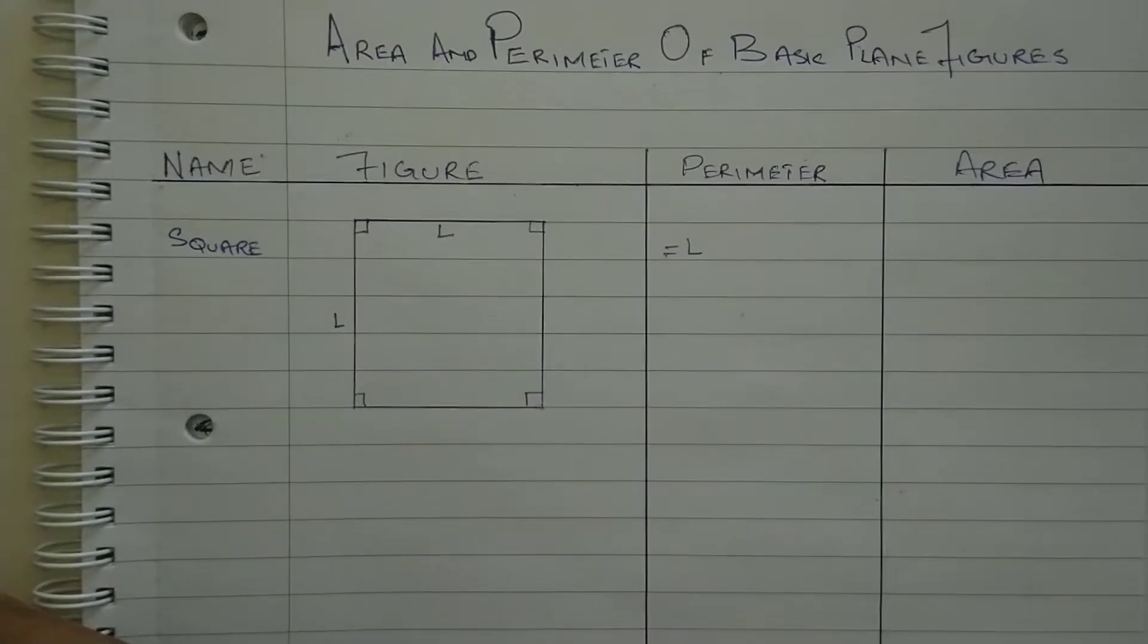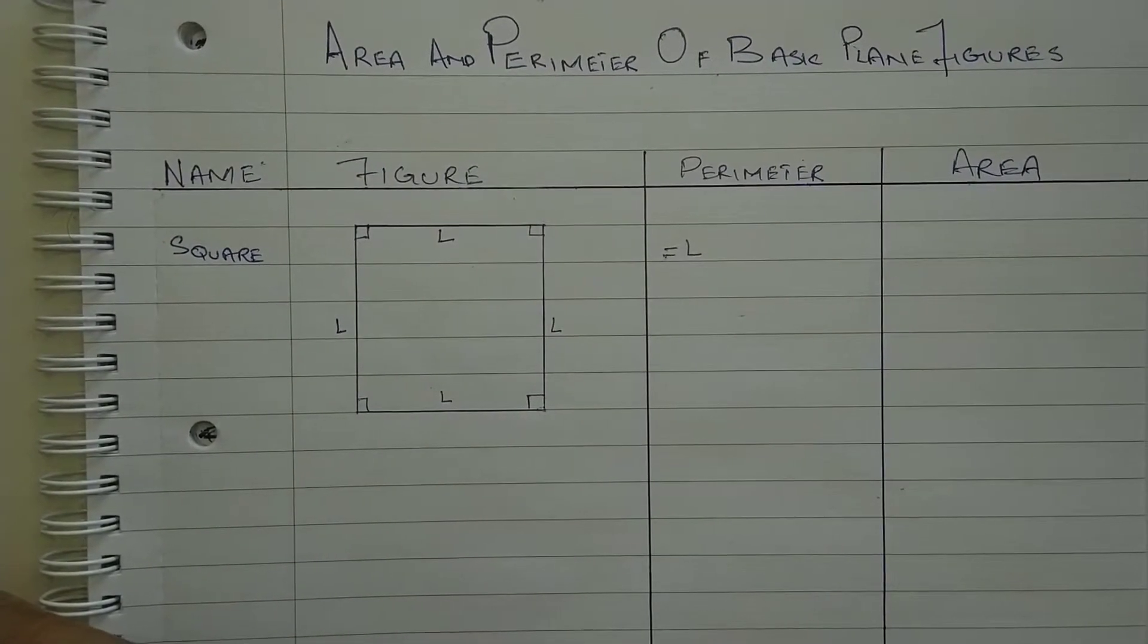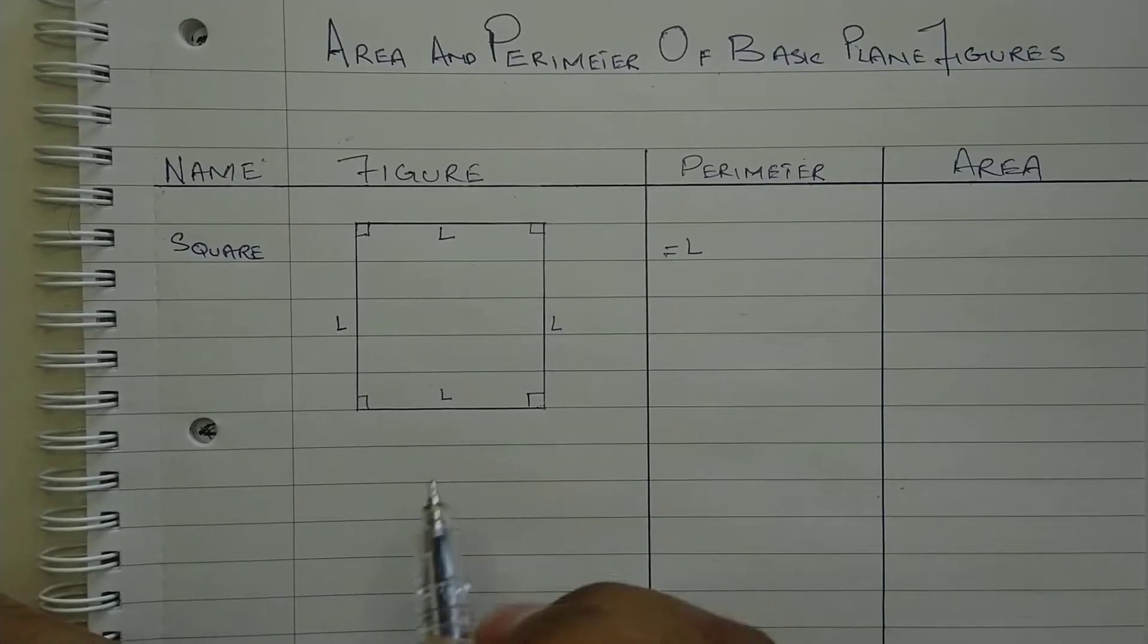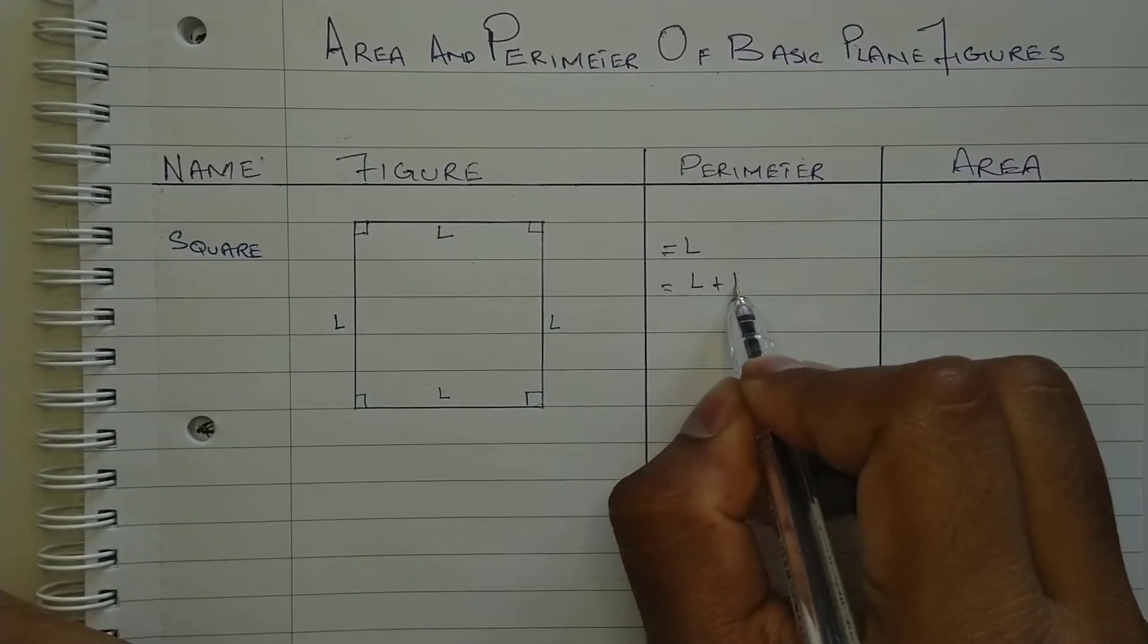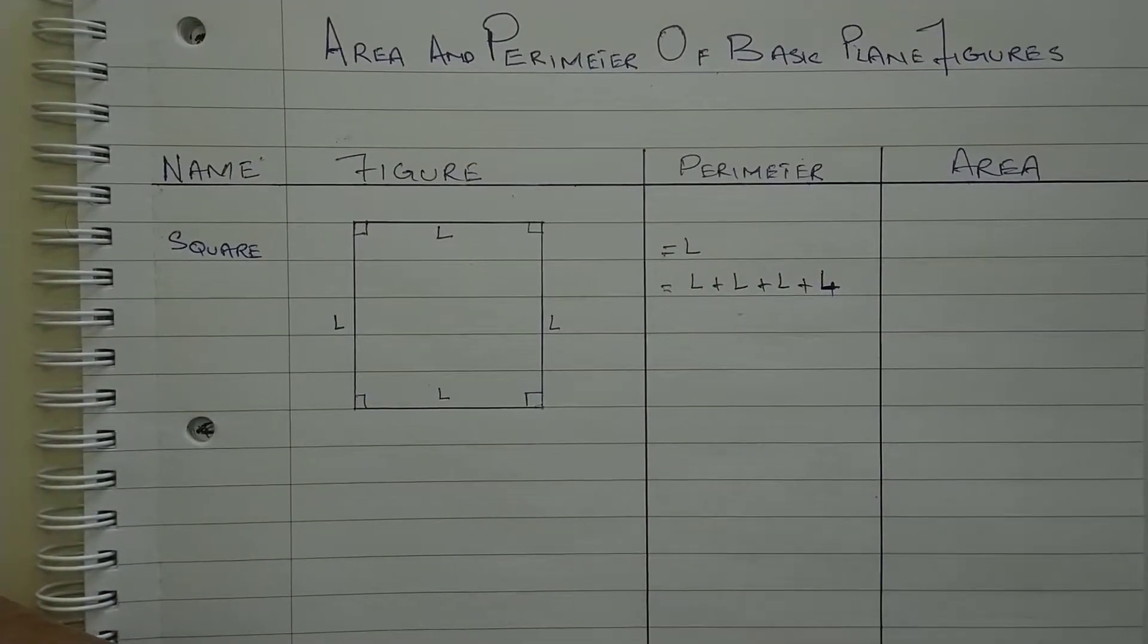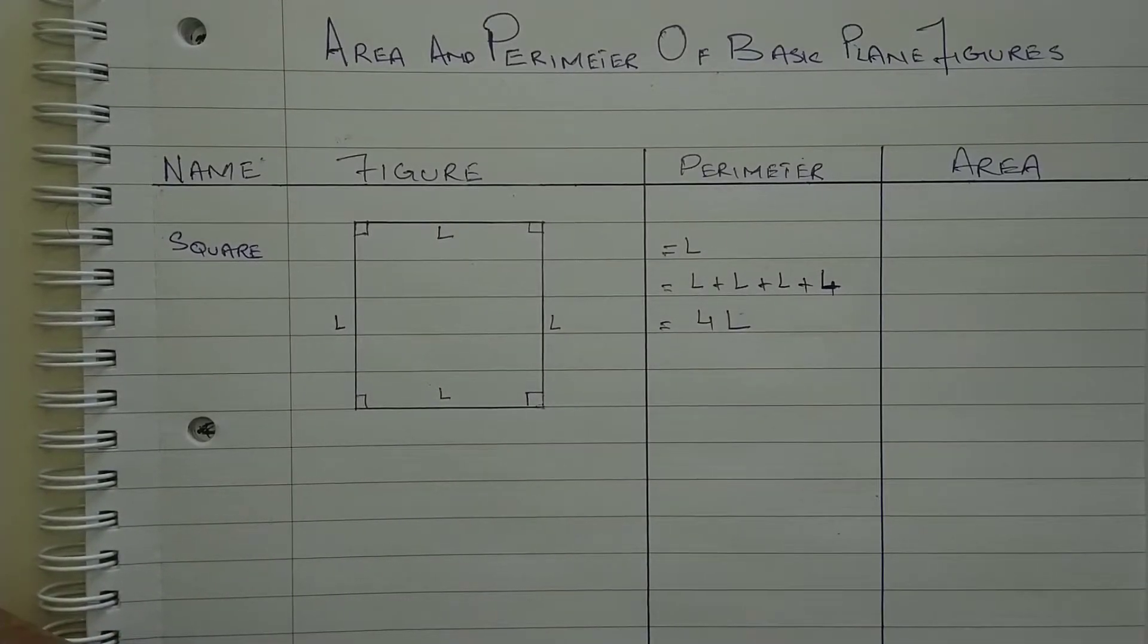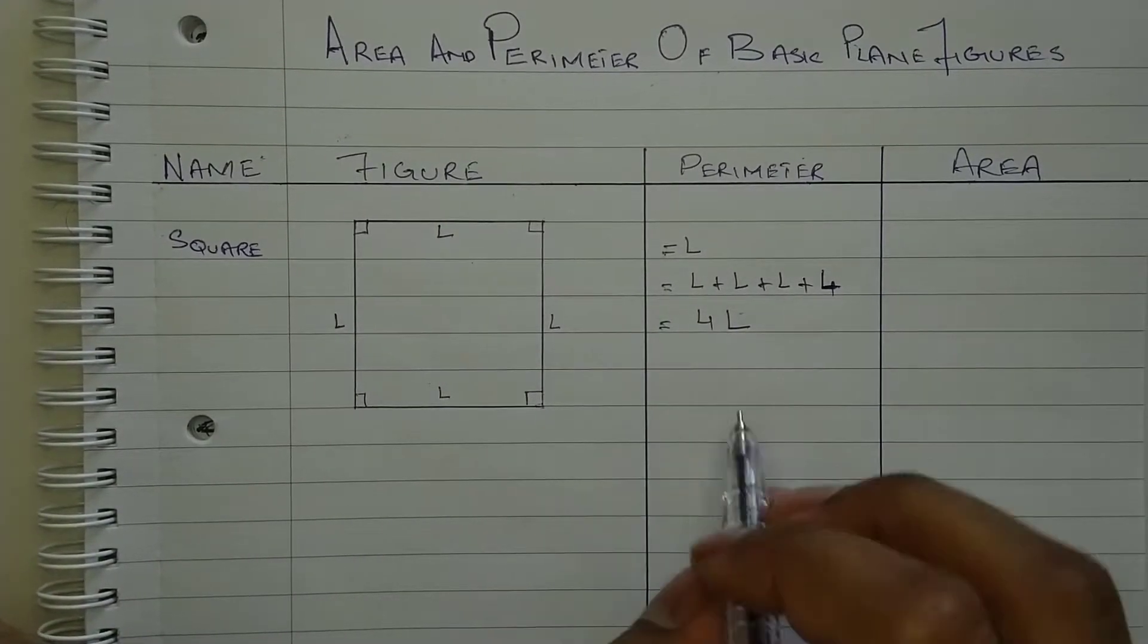So being sum of all sides, to calculate the perimeter, we'll add all these lengths. That becomes L plus L plus L plus L. It becomes 4 times L. We'll take 4L. So to calculate the perimeter of a square, you need to take one side and multiply it by 4.